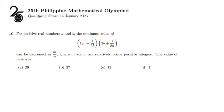Here's an optimization problem from the 25th Philippine Mathematical Olympiad. For positive real numbers a and b, the minimum value of (18a + 1/3b)(3b + 1/8a) can be expressed as m/n